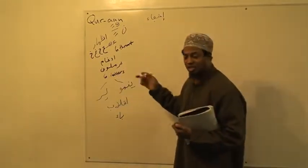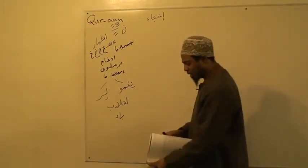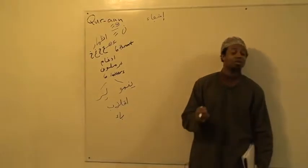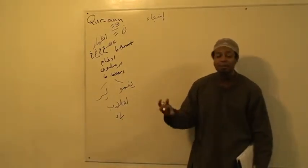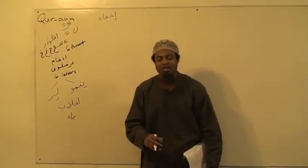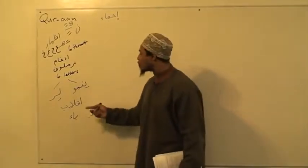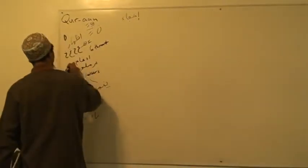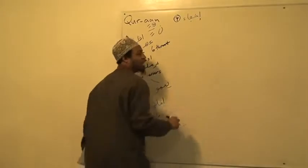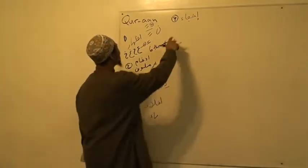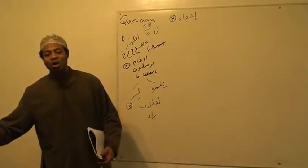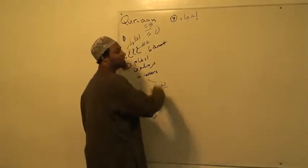We learned the letters of Ikhfa just now. The fourth rule is Ikhfa, and it covers the remaining letters. We have six letters for Idhar, six for Idgham, and one for Iqlaab. Six plus six is twelve, and adding one is thirteen. The rest — the remaining letters — belong to Ikhfa.